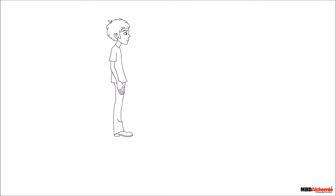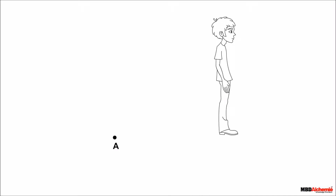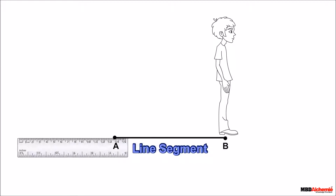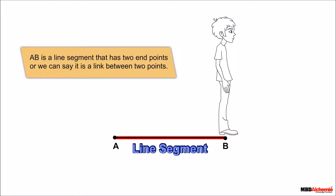Suppose a man is standing at point A. If the man starts walking through this point and stops at an endpoint B, we have a starting point and an ending point. The distance between these two points is called a line segment. The length of this line can be measured easily.